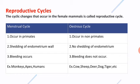Examples of the menstrual cycle: monkeys, apes, and humans. Examples of the estrus cycle: cow, sheep, deer, dog, tiger, etc. The difference between the menstrual cycle and the estrus cycle is frequently asked in exams, so please concentrate on this topic.